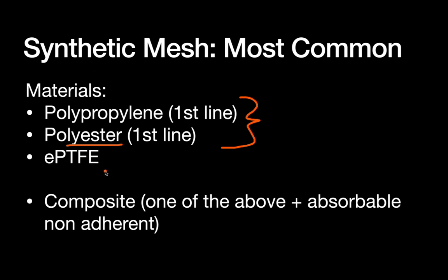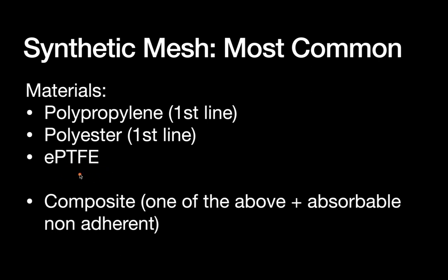Polyester has slightly less shrinkage or contraction but a greater inflammatory response, making it harder to remove if necessary. ePTFE is the original mesh material and is completely biologically inert — which sounds like an advantage, but we actually want mesh to incorporate well into body tissues over time for strength and infection resistance. If ePTFE gets infected, it absolutely must be explanted. The final major synthetic type is composite mesh, which combines polypropylene with a second absorbable, non-adherent layer.